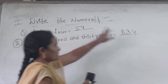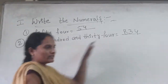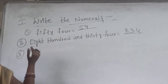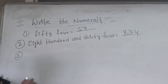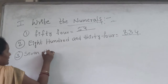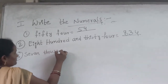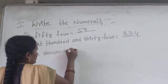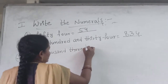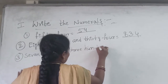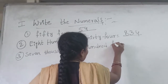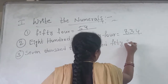These are called numerals. Now another example with larger numbers: 7,000, 3,000, 5,000, 6,000.